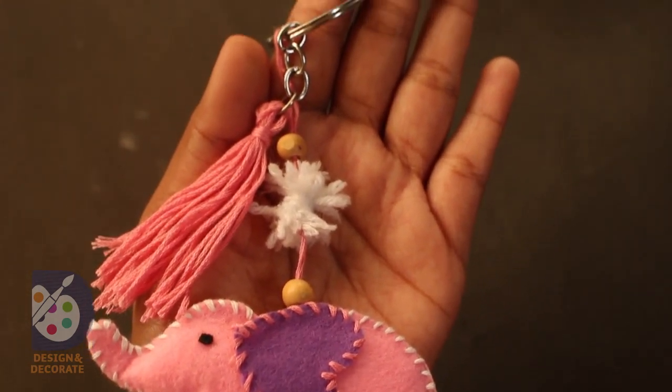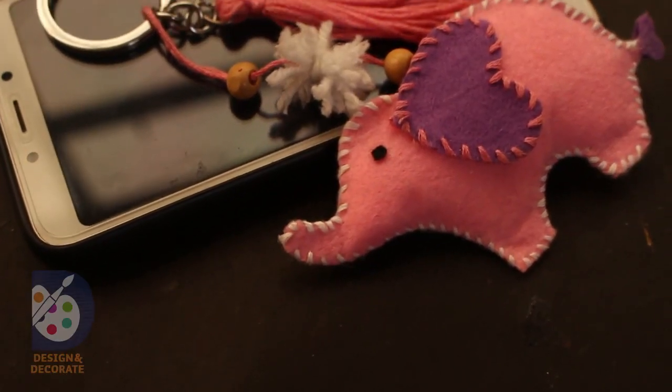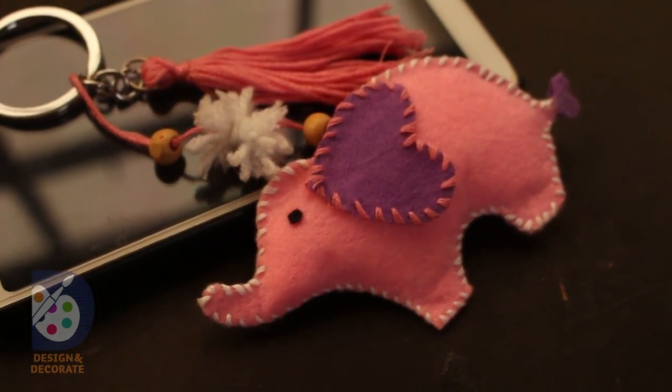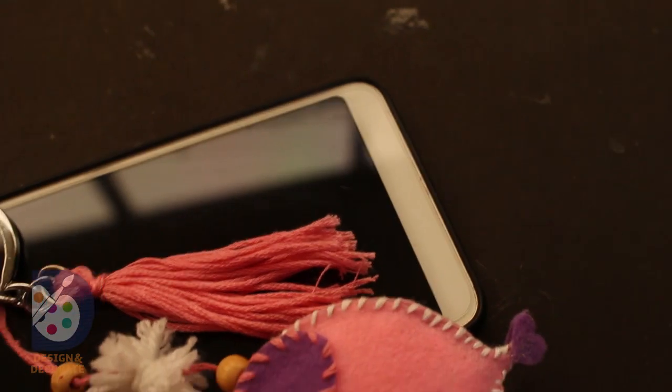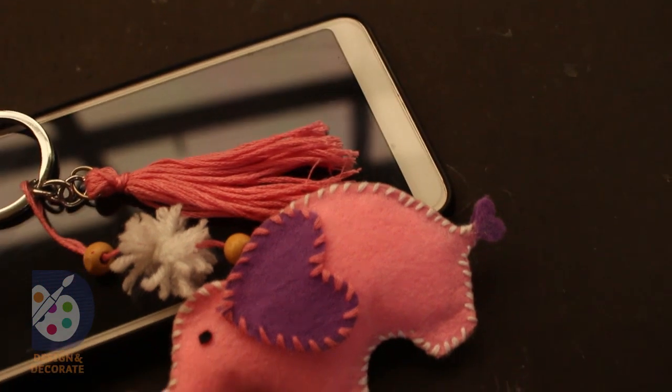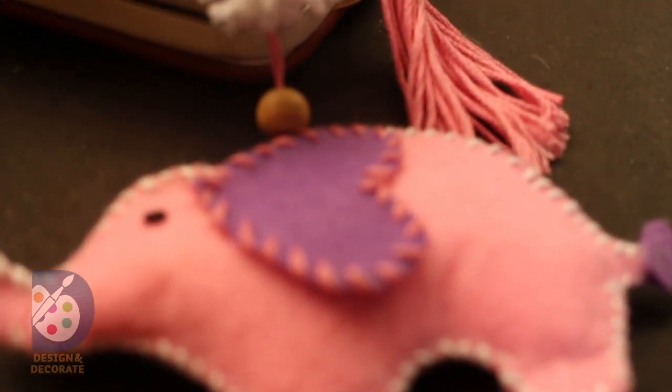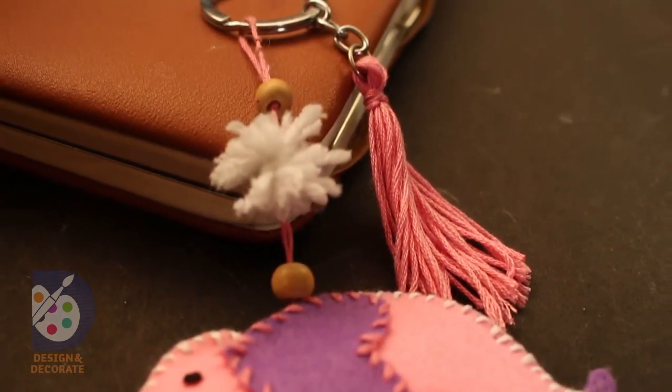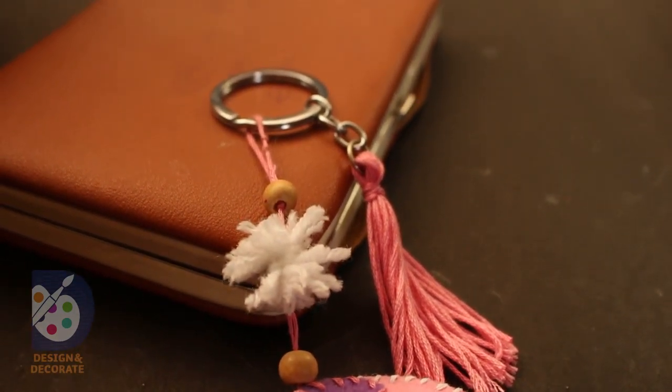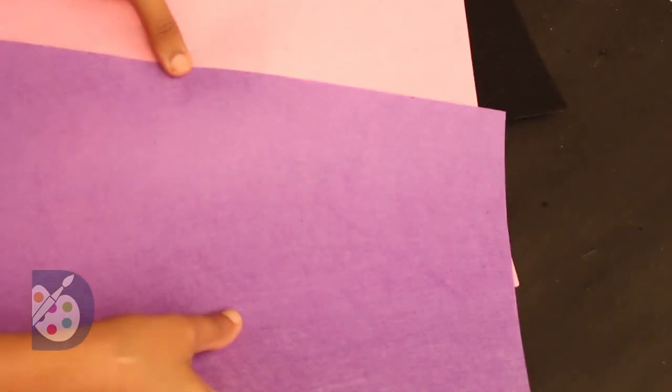Hey guys, welcome back to Design and Decorate. In today's video I am showing you how to make this cute little elephant key holder using felt. Felt is a material which looks like velvet paper or a type of cloth. Let's get started and check out the process. The things needed are given above and you can see how this material looks like.